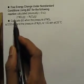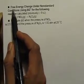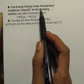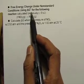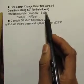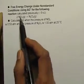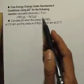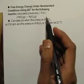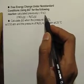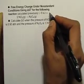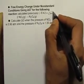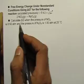Hello everyone, here we will solve this question on free energy change under non-standard conditions using delta G° for the following reaction. The previously calculated value is minus 6 kilojoules per mole. This value is given for delta G° and the...